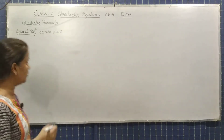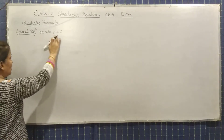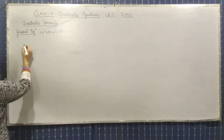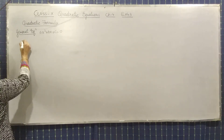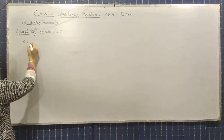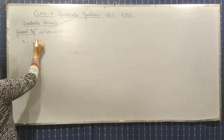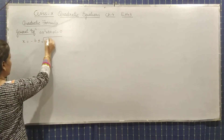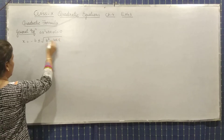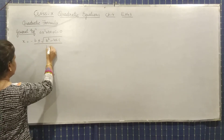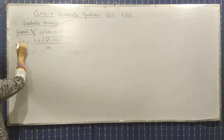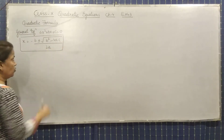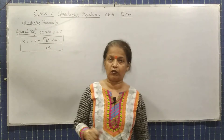Look here. This is the quadratic equation which is in the standard positive form. So to find out the value of x, the formula is: x = (−b ± √(b² − 4ac)) / 2a. This is the quadratic formula which you will use in exercise 4.3.